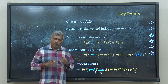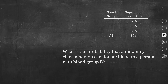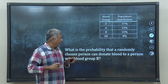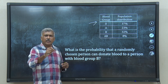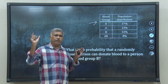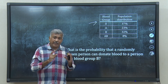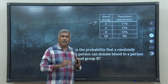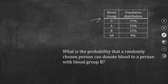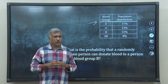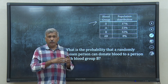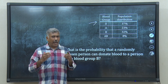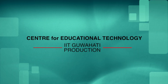With this, I will end the lecture. Before we end, let me give you a problem to solve. Suppose we have collected data from a population and identified the distribution of 4 blood groups: O, A, B, and AB. The question is: if I pick someone randomly from the population, what is the probability that this random person can donate blood to a person whose blood group is B? Use the addition rule, product rule, or the concepts of mutually exclusive and independent events to solve this. Happy learning. Thank you.